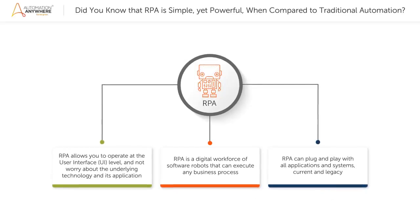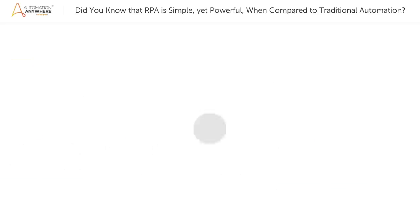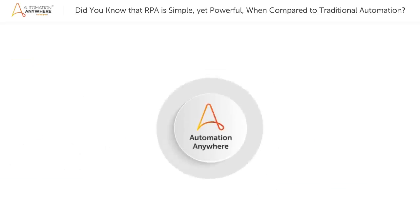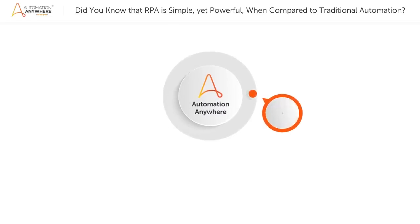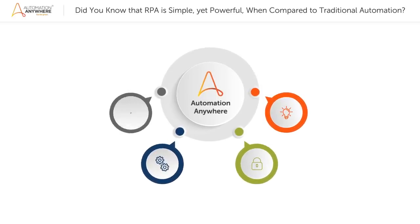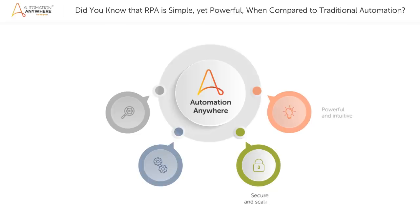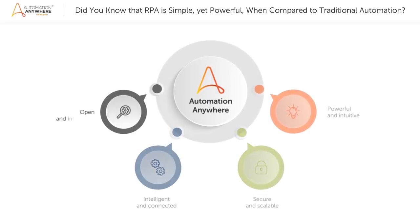Add cognitive automation, and your digital workforce can handle even complex unstructured information to automate any business process from end to end. Now that we understand what RPA is and how it is different from traditional automation methods, let's understand the business benefits of Automation Anywhere's RPA tool. Automation Anywhere Enterprise empowers the workforce for the future as it is powerful and intuitive, secure and scalable, intelligent and connected, open and integrated.